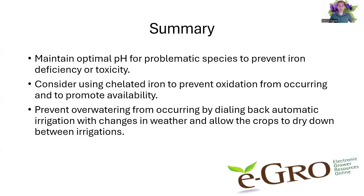In summary, some take-home messages: maintaining an optimal pH for problematic species to prevent iron deficiency or toxicity from occurring is important. Consider using chelated iron to prevent oxidation from occurring and to promote plant availability. Then prevent overwatering by dialing back automatic irrigation with changes in weather and allow those crops to dry down between irrigations. We do have a lot of eGRO diagnostics resources on there, such as the irony of overwatering and minding the mist. There are a lot of good resources there, and with that, I'd like to thank you for your time today.